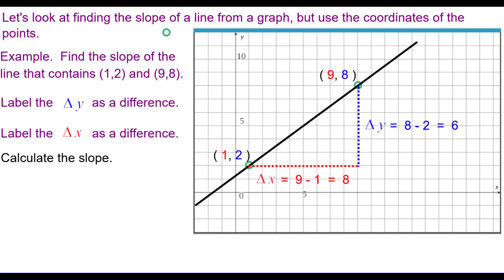Calculate the slope. We call the slope the change in y over the change in x, which written as differences would be 8 minus 2 over 9 minus 1, which is 6 eighths. And then, of course, we simplify that to 3 fourths. So the slope of this line is positive 3 fourths.